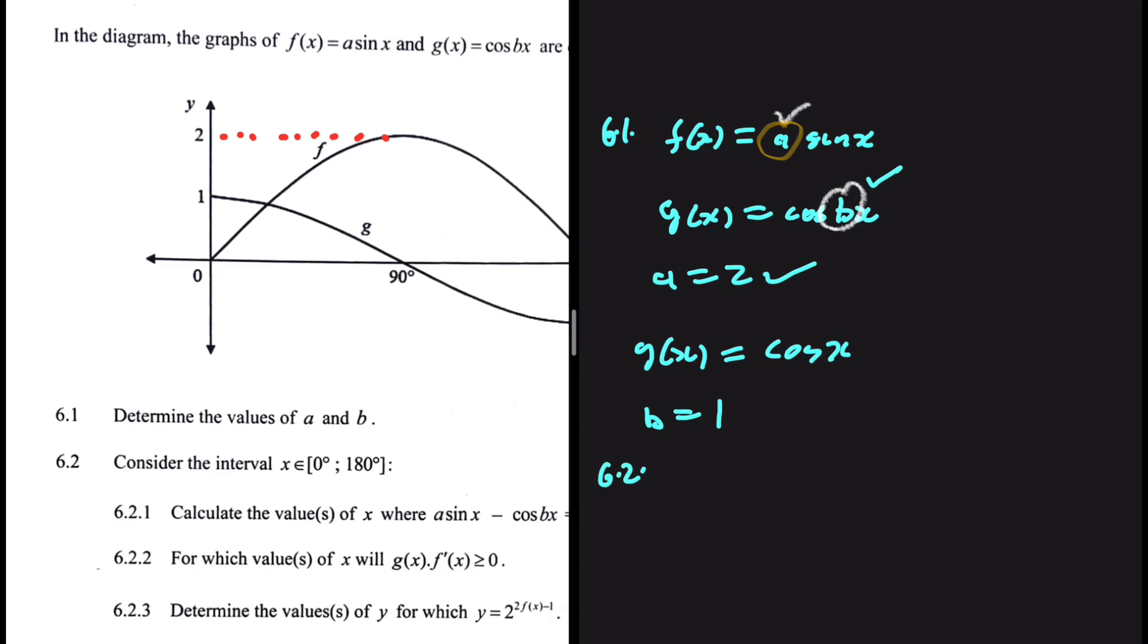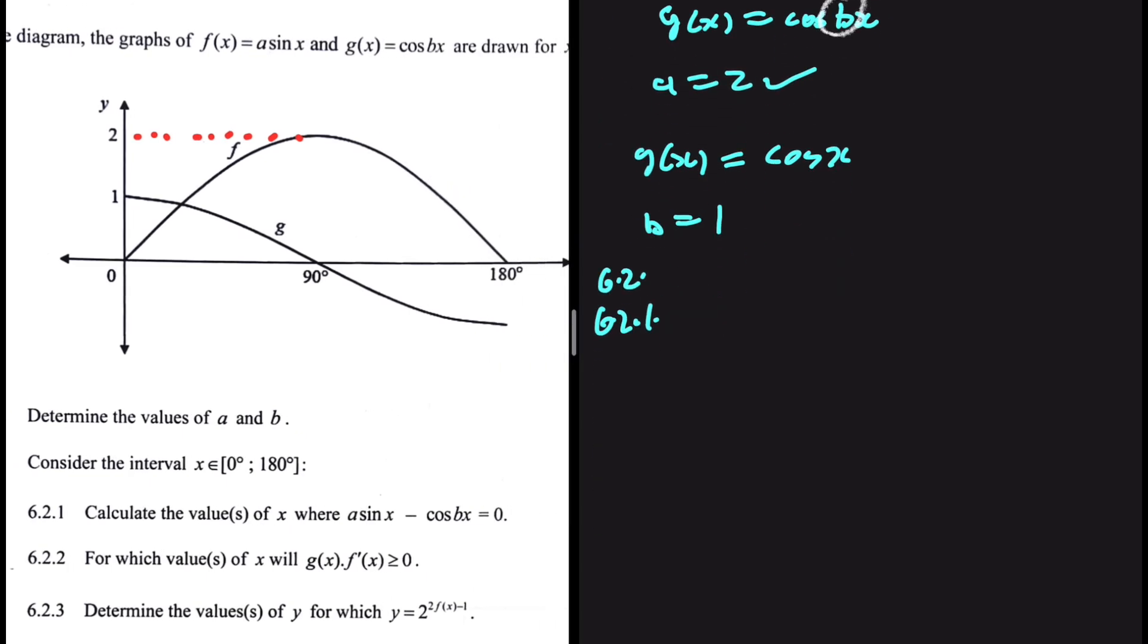Let's look at 6.2 and 6.2.1. Consider the interval x is an element of 0 to 180. The first question, let's calculate the values of x for which a sin x minus cos bx equals 0.